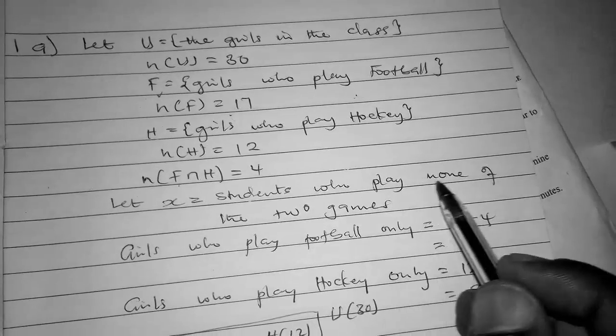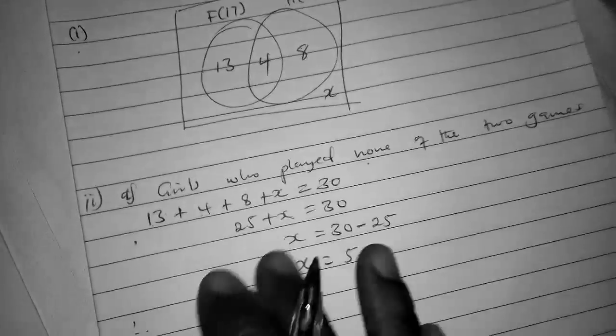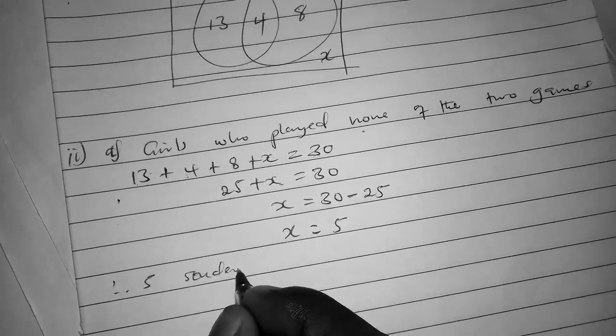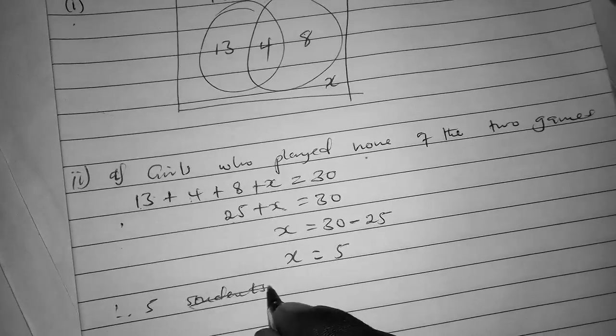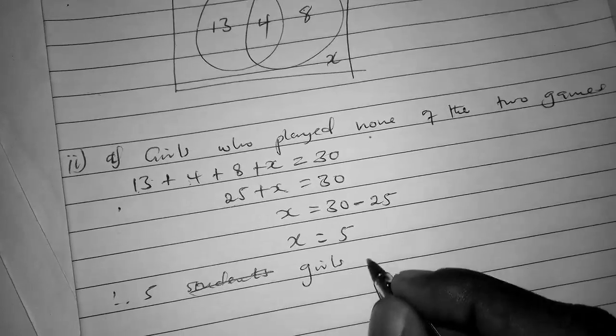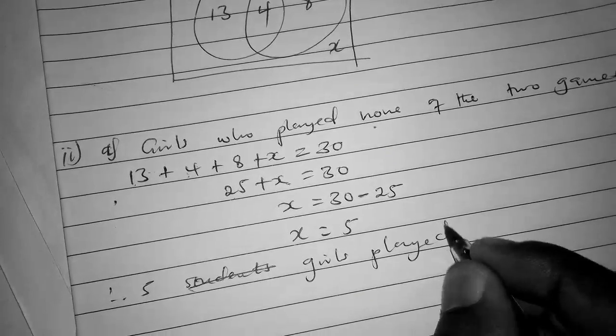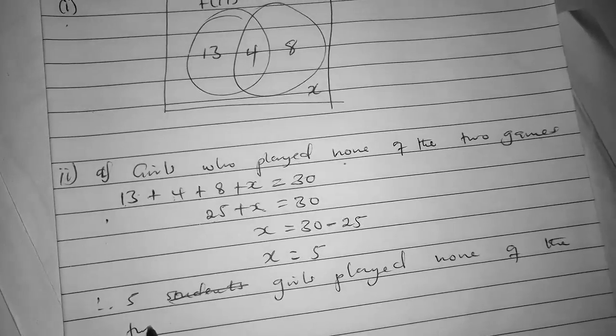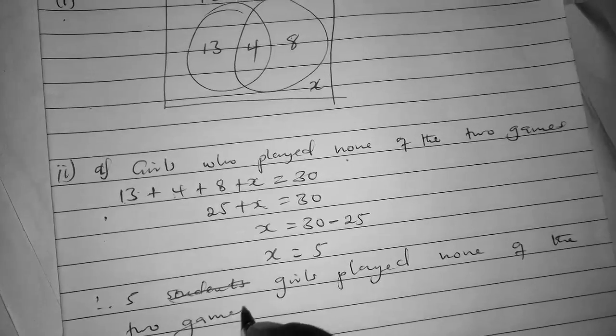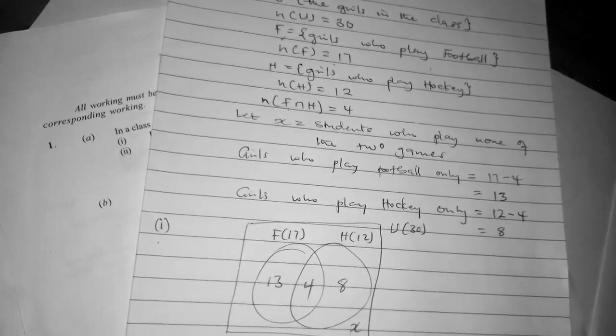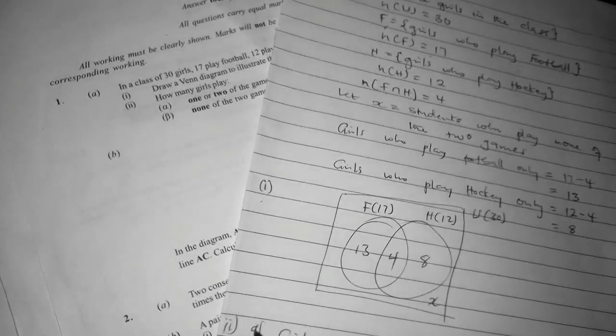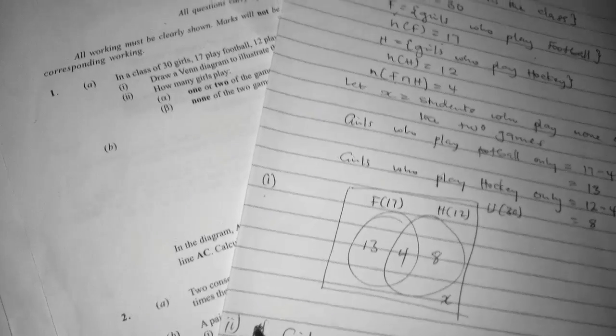Looking at our description, we have X = students who play none of the two games. Therefore, five girls played none of the two games. We have solved part (ii), and now let's look at part (i).